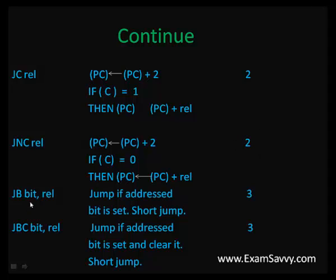JBC (jump if bit is set and clear): if the bit is set, clear it and jump to some label. If you need this in your program, use JBC — bit is set, clear it, and jump to another address. JZ (jump if zero) and JNZ (jump if non-zero) are also available as two types of branching instructions in 8051.